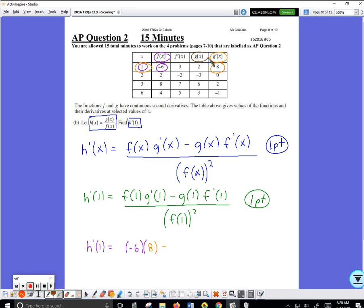Subtract g when x is one—g(1) is two—that in parentheses. I always use parentheses when substituting for variables. f'(1)—f prime when x is one is three. And that's all divided by f(1), so let's see, f when x is one is negative six. Did that already.